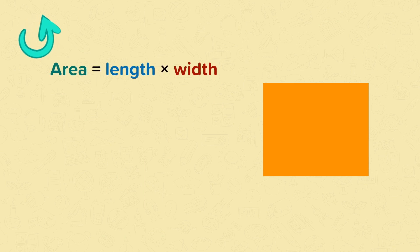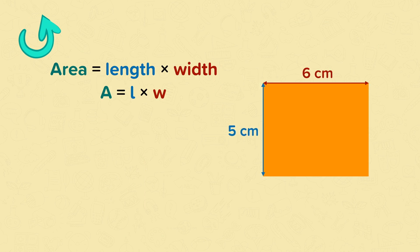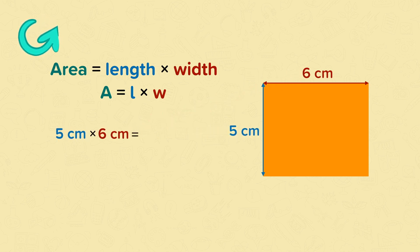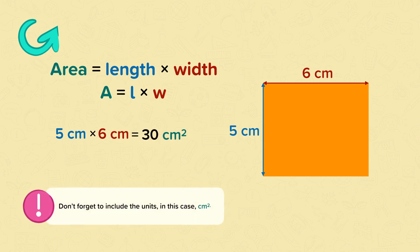We already know that the area of a rectangle is the length times the width. So if we know the length and the width of this rectangle we can easily work out its area. The length of the rectangle, 5 centimetres, multiplied by the width of the rectangle, 6 centimetres, is 30. The area of the rectangle is 30 centimetres squared. Don't forget to include the units — in this case, centimetres squared.